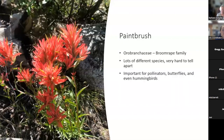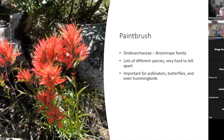Then we have our paintbrush, which is out and about — it was one of the earlier flowers I saw around here. There are lots and lots of different species of paintbrush and they are really hard to tell apart; you can have an orange, a yellow, and a red paintbrush all in the same area and they might be the exact same species. The red paintbrush is really important food for hummingbirds as well as bees. Most of the red parts are not actually petals — they are bracts — so the red attracts hummingbirds, since most insects don't see red as well.